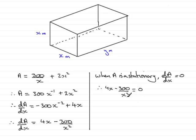To remove the fraction, I multiply both sides by x². So 4x multiplied by x² gives 4x³, and minus 300/x² multiplied by x² gives minus 300.